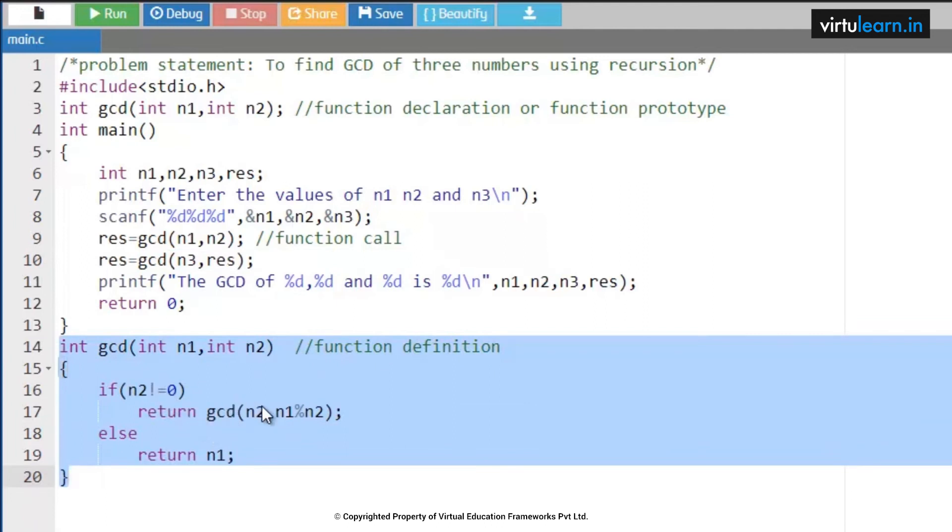Now let us check for 30 and 10. GCD of 30 comma 10: the first n2 value 10 is not equal to 0, condition is true, which means GCD of n2 value is 10 comma n1 mod n2, 30 mod 10 is 0. Now GCD of 10 comma 0, which means n1 is 10, n2 is 0.